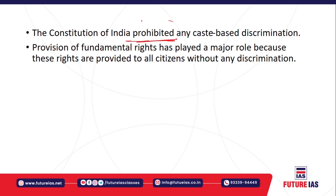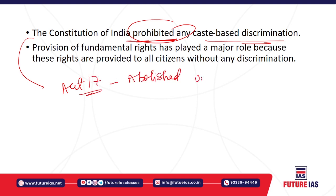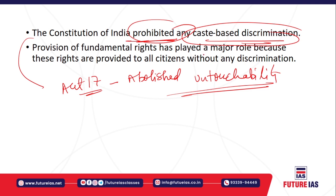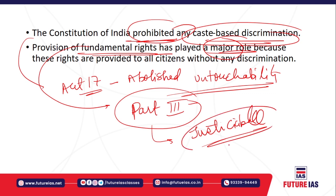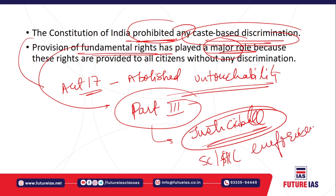The Constitution of India prohibits caste-based discrimination. Article 17 of the constitution abolished untouchability from India in any form. Caste-based discrimination was prohibited but still exists in different forms. The fundamental rights given in Part Three of the constitution provide the most fundamental rights equally to every section of society without any discrimination. These fundamental rights are justiciable — meaning people can move to the Supreme Court and High Courts for their enforcement.